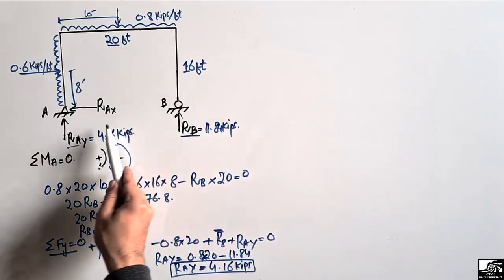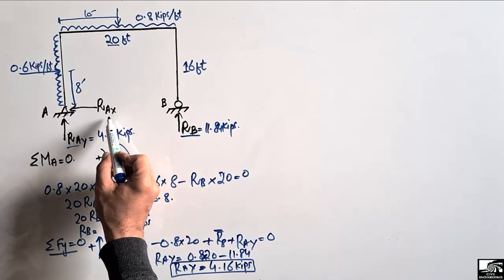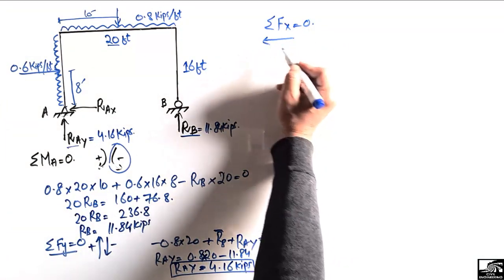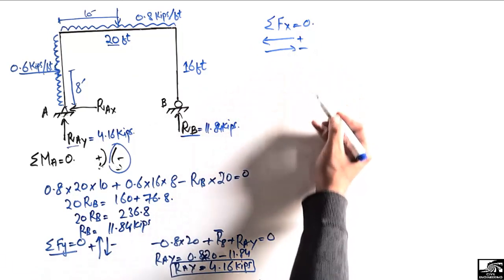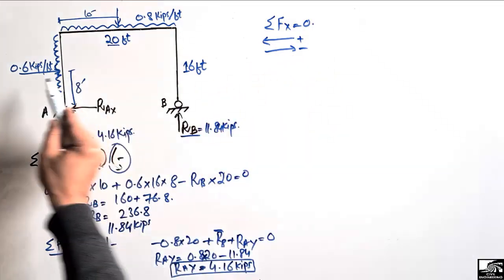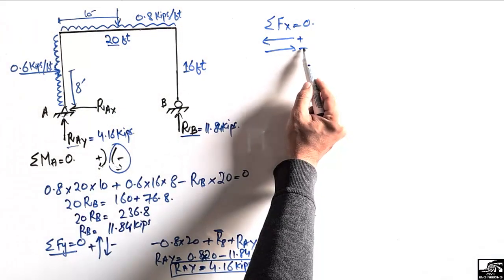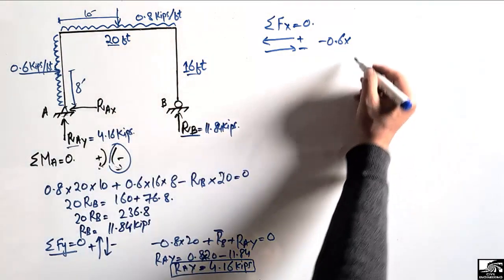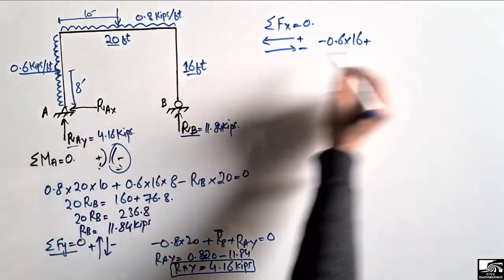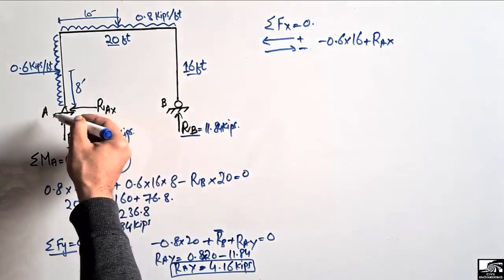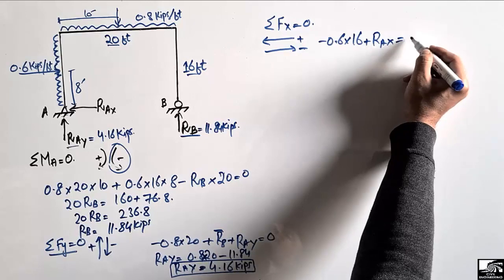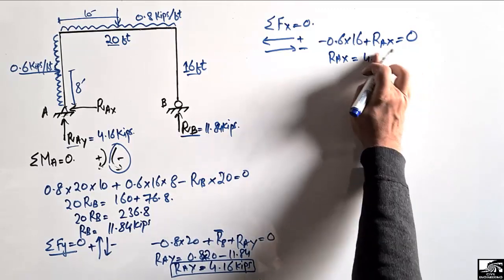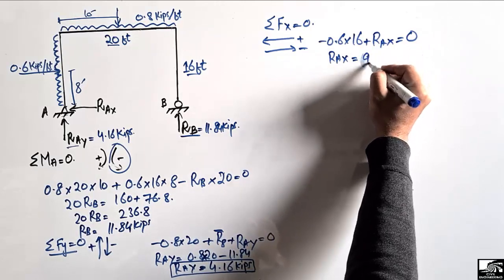Now we find RAX. Taking summation of horizontal forces equal to zero — forces acting to the right are positive, forces to the left are negative. The uniformly distributed lateral load of 0.6 kip per foot over 16 foot acts in the negative direction: minus 0.6 × 16. Adding RAX (acting in the opposite direction to the applied load) and setting equal to zero, RAX comes out to be 9.6 kips.